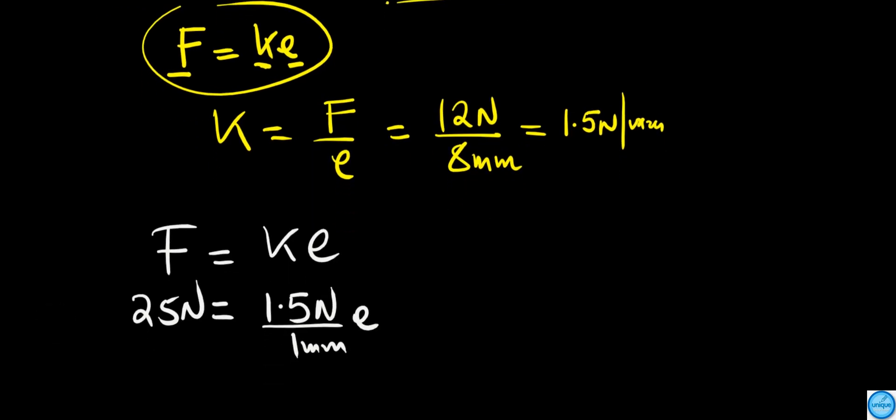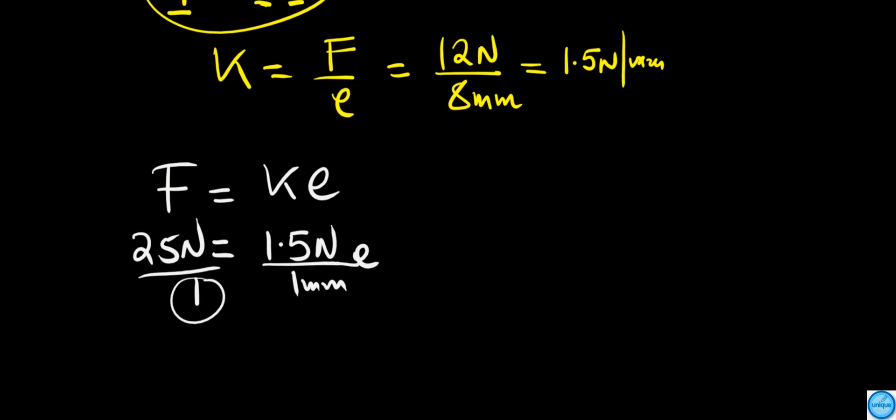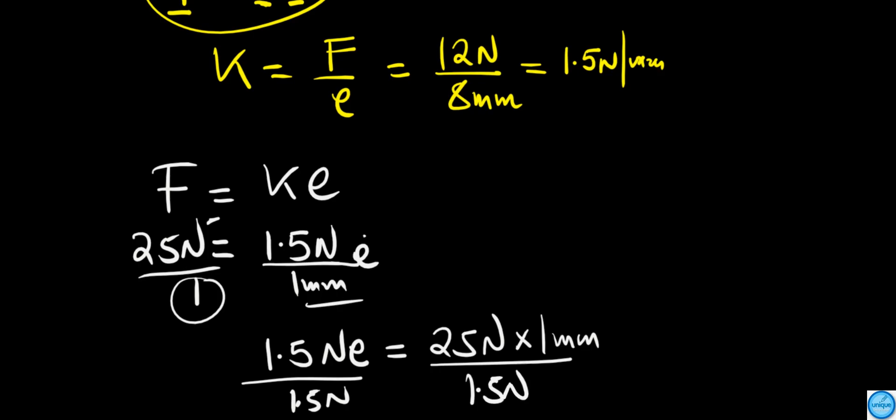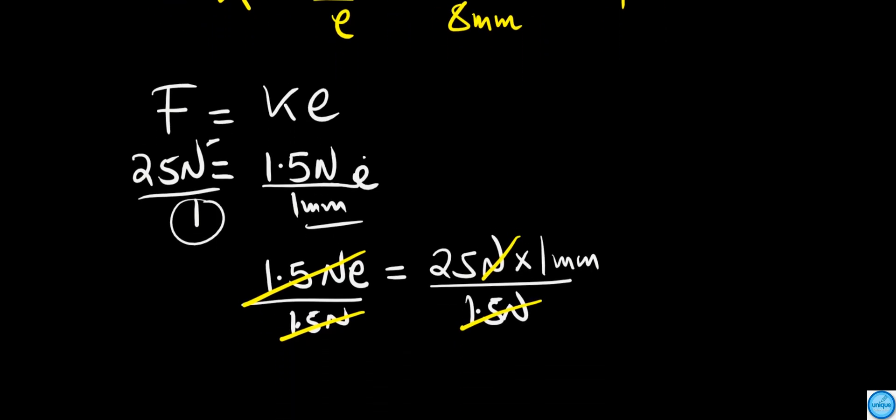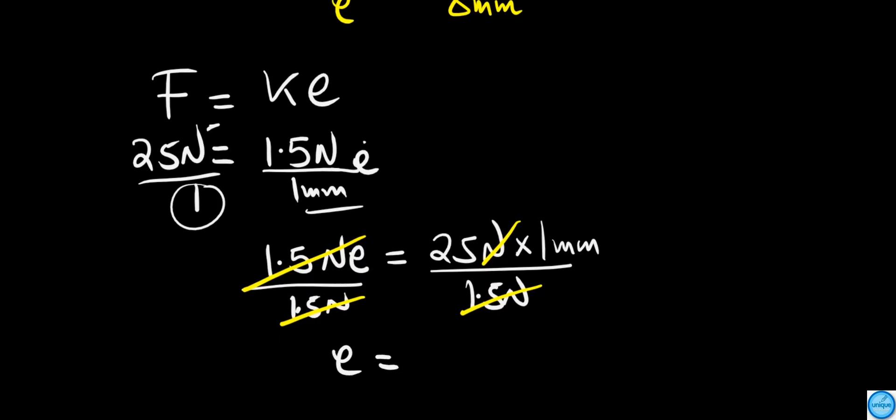So we just do cross multiplication. 1.5 Newtons times e equals 25 Newtons times 1 millimeter. The Newtons cancel, so we're going to remain with e equals 25 divided by 1.5.